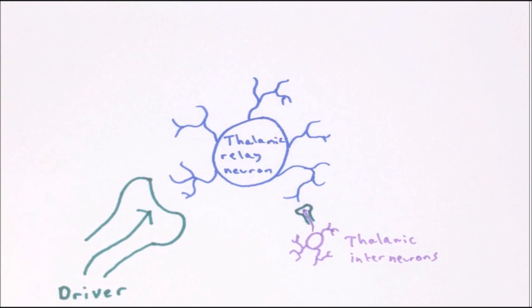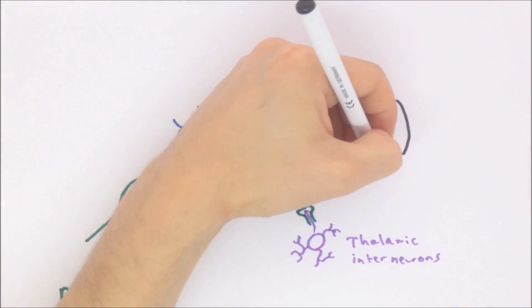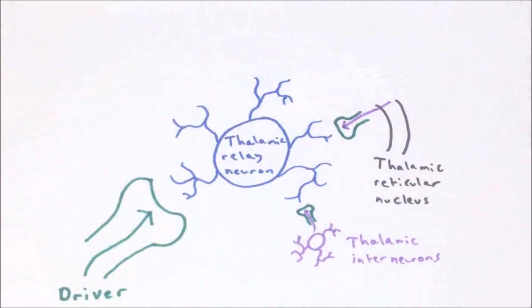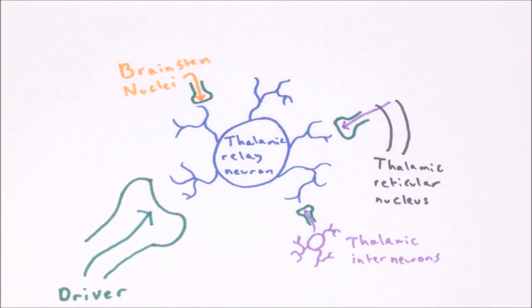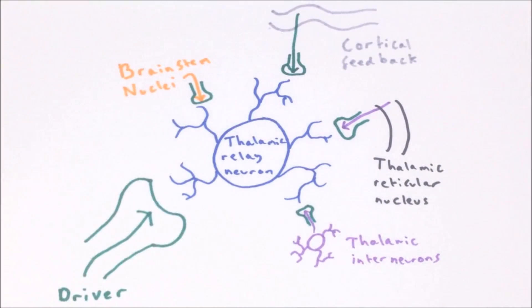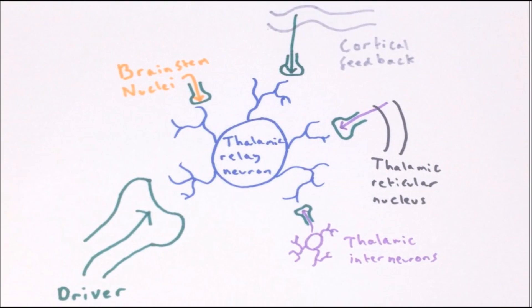Modulators can arise from a variety of different brain areas including inhibitory interneurons within the thalamus, the thalamic reticular nucleus, brain stem regions, and feedback from the cortex.